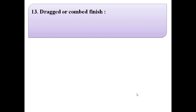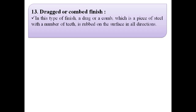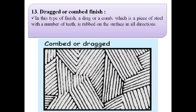The next finish is dragged or combed finish. In this type of finish, a drag or comb — which is a piece of steel with a number of teeth — is rubbed on the surface in all directions. This image shows the combed or dragged finish. Dragged finish is suitable for soft stones only.